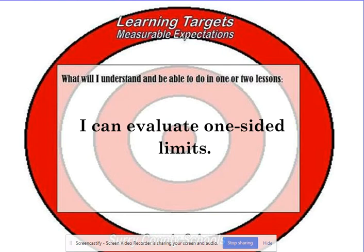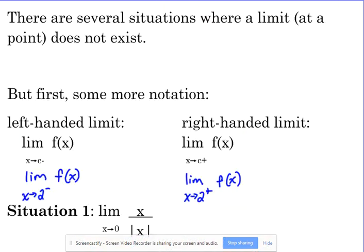We're going to talk about a concept called one-sided limits. I've kind of already been using this phrasing a little bit, but we're going to look at the notation and everything. There are several situations where a limit at a point does not exist. There are certain places where a limit may not exist. Let's look at some more notation.